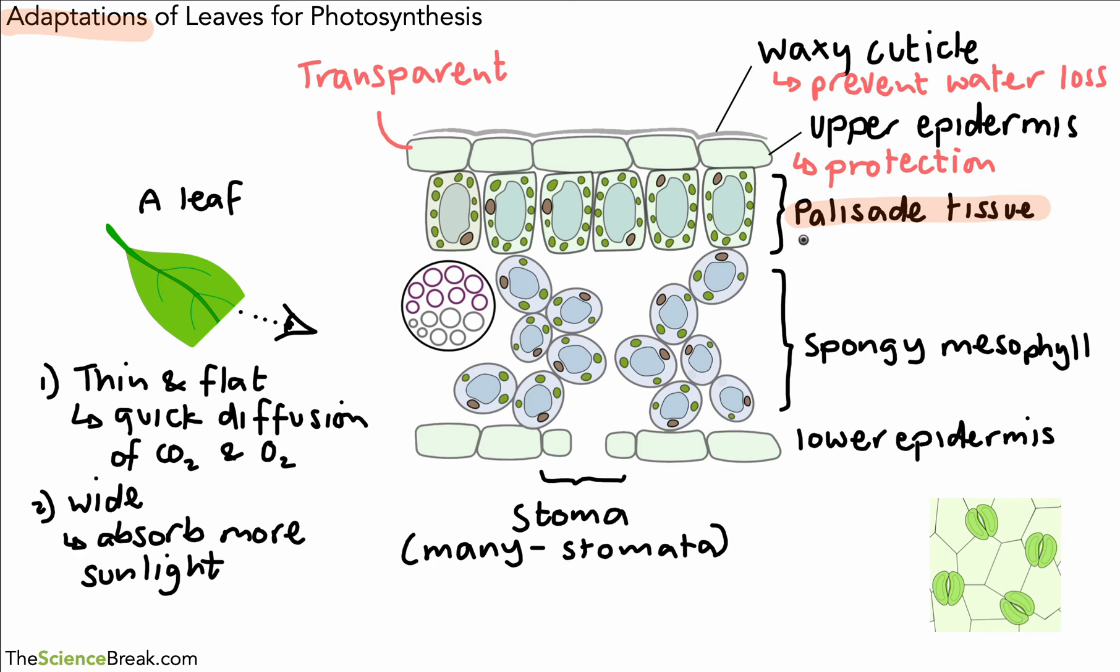The palisade tissue, this is really really important because it has cells and each of the cells have many chloroplasts. So palisade tissue has many chloroplasts for photosynthesis. You may remember that chloroplasts contain chlorophyll which absorbs the sunlight to allow photosynthesis to happen.